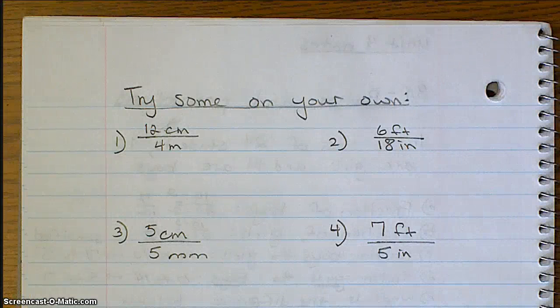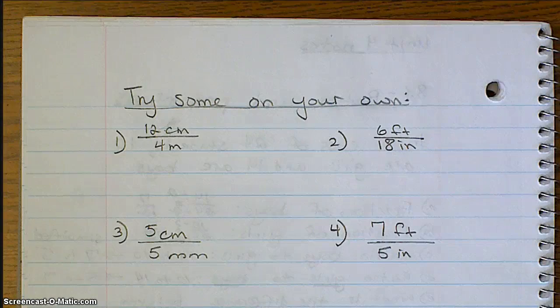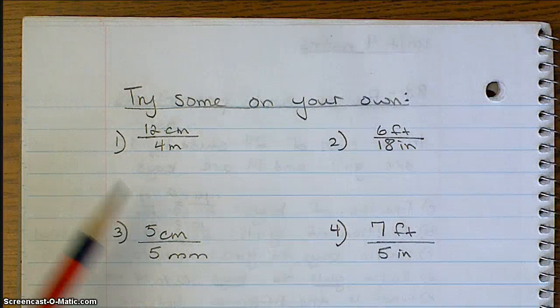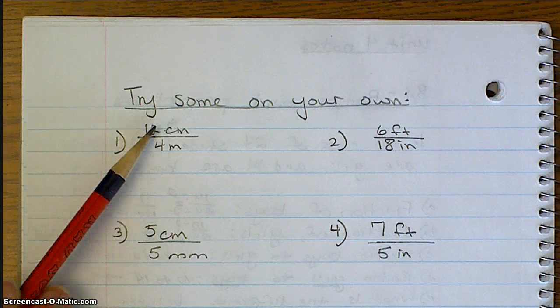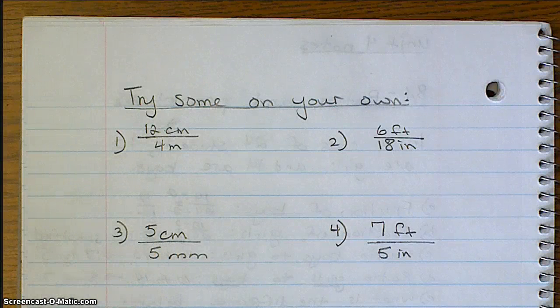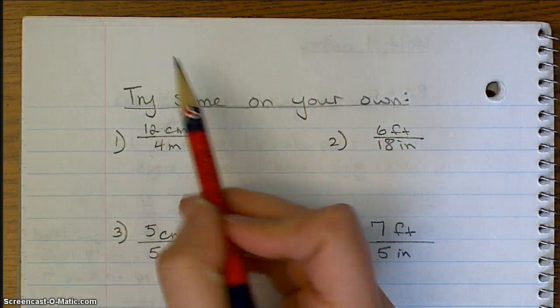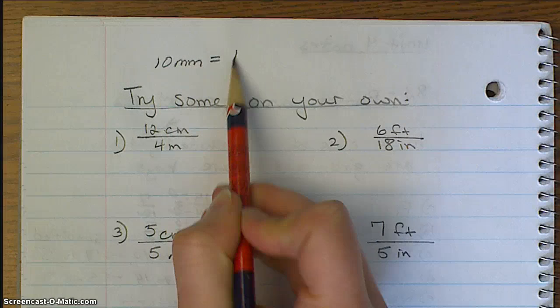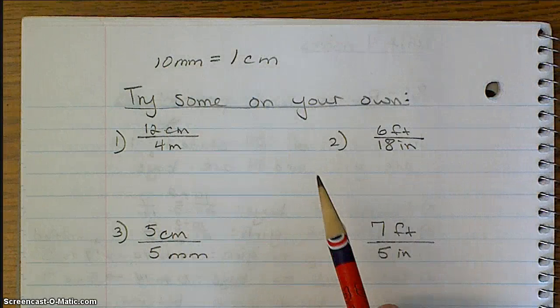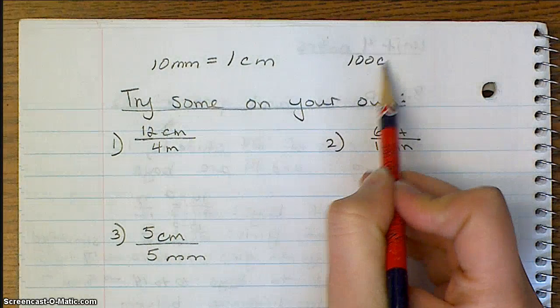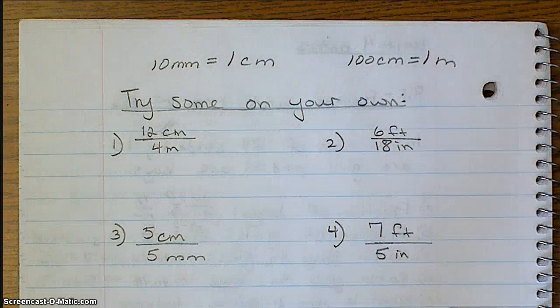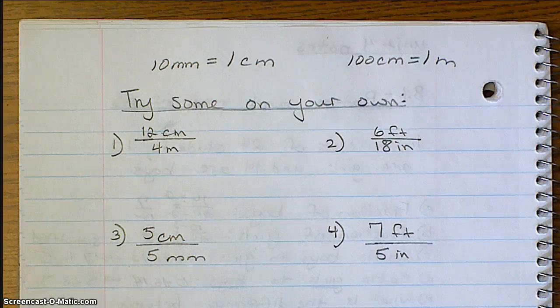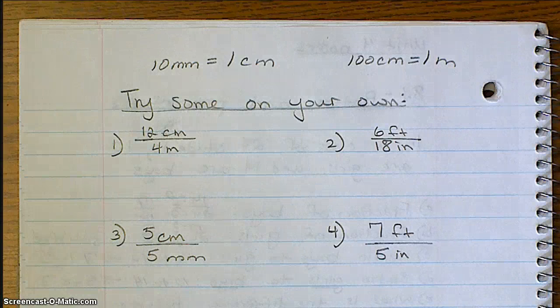Here are a few that you can try on your own. Two of them are converting feet to inches like we just did. The others are converting meters to centimeters, or centimeters to millimeters. So, just in case you don't remember, there are 10 millimeters in every centimeter, and there are 100 centimeters in every meter. Okay, just in case you don't remember. Give these a try, and then when you're done, you can resume the video to check your answers.